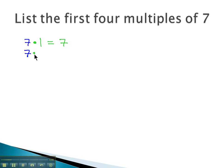Then we take 7 times 2 to get the second multiple, or 14. Then we can take 7 times 3 to get the third multiple of 21, and 7 times 4 to get the fourth multiple of 28.